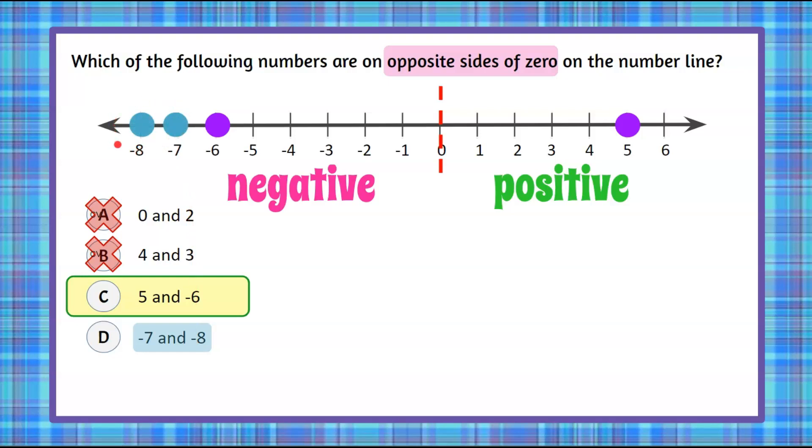So they're not on opposite sides. We were correct. Answer choice D is incorrect, and our answer choice is C. Five and negative six are on opposite sides of zero.